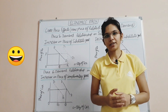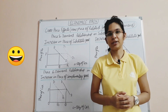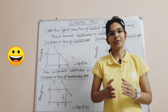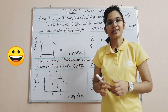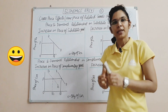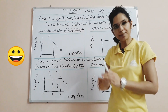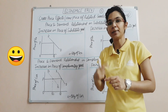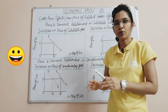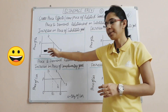Let's see the cross price effect — how the price of related goods affects demand. First, we will see what the relationship of substitute goods is. When the price of a substitute good increases or decreases, what is the effect on our main good? Here our main good is tea, and the substitute good is coffee. We take the case of an increase in price of the substitute good.